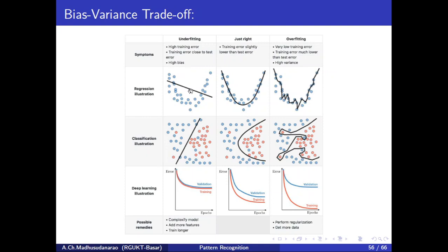When that model is underfitting your data, you are going to see high training error. You can see this line is not fitting this data very well - your training data is also unable to fit properly with the help of this model. It means you are going to get high training error, and test error also will be high. Your training error itself is so high, so you can't expect test error to be low - test error will also be very high, almost same as your training error.